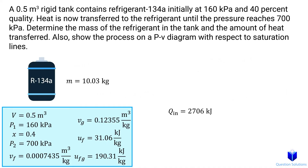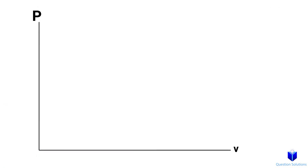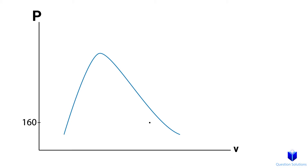The last step is to draw a pressure versus specific volume diagram. First, we draw the general PV saturation line for a pure substance. Our initial point is right here — the pressure is 160 kilopascals and it starts in the saturated liquid-vapor region. The next point would be right here with the pressure of 700 kilopascals.